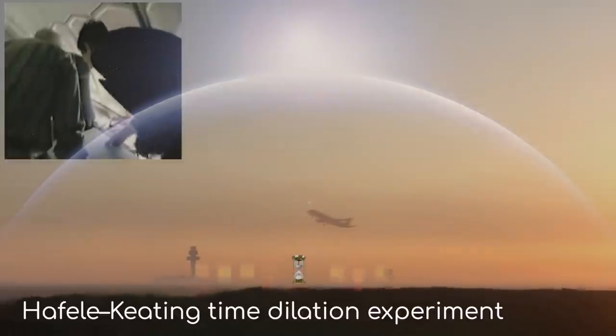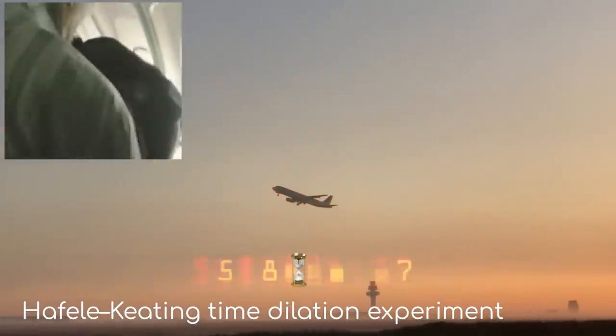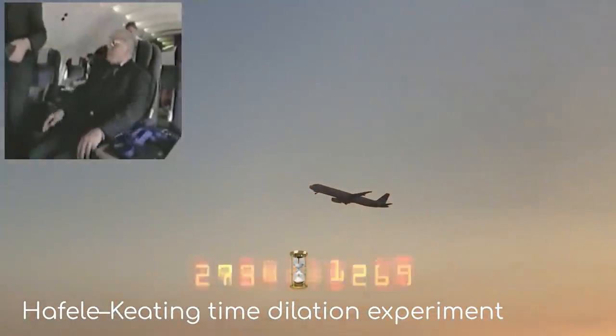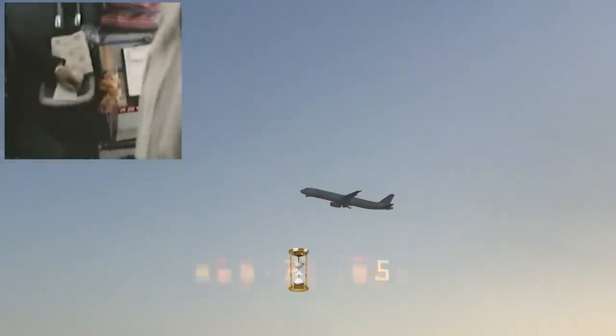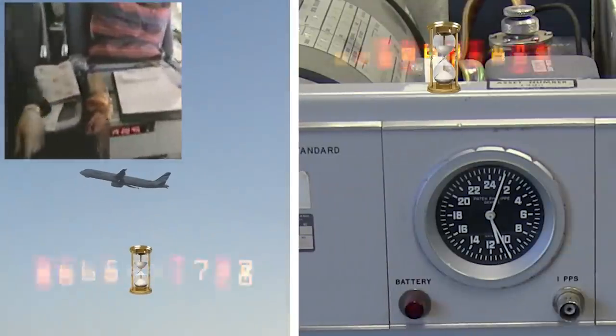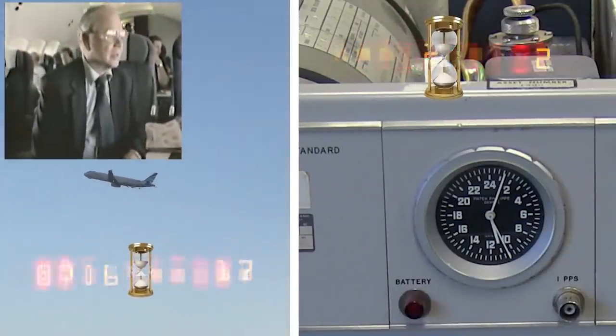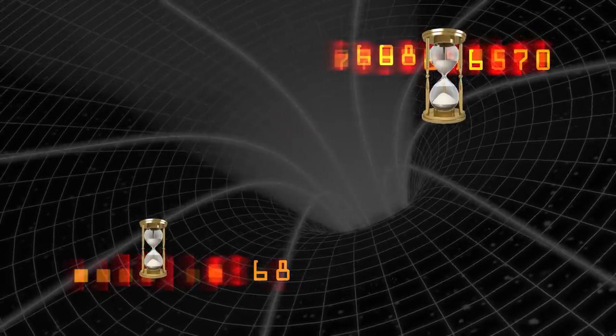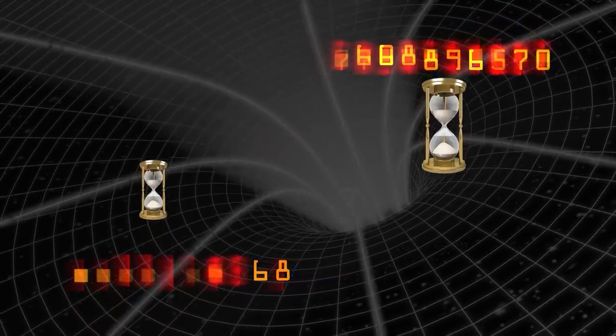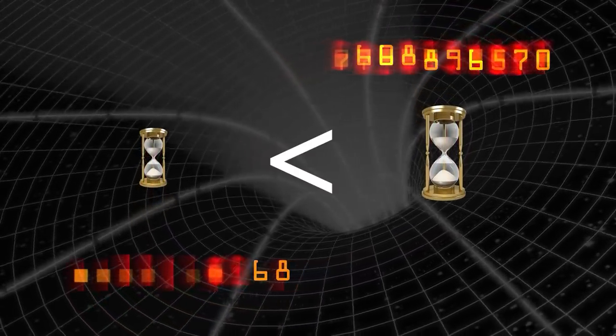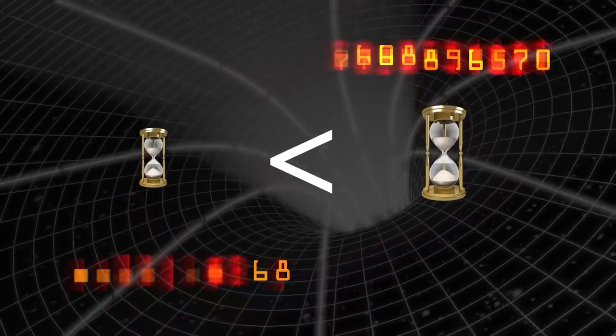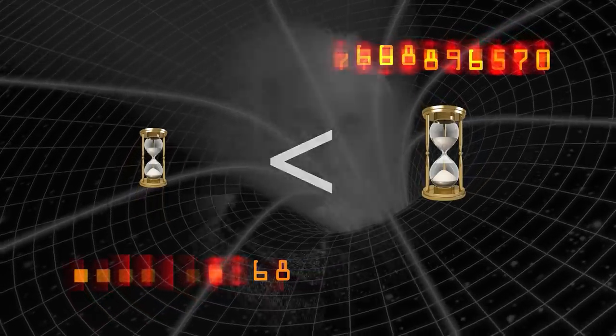They took two clocks. One they put on a plane and flew around the world with it on board, increasing its speed for an extended amount of time, while leaving the other at a stationary location. When they eventually returned and compared the clocks again, they found that the clock that had travelled faster had actually recorded less time, in line with what General Relativity had predicted. General Relativity is a real thing.